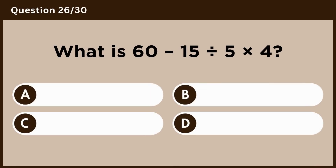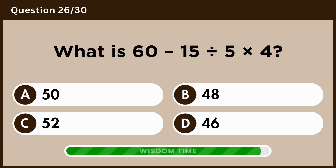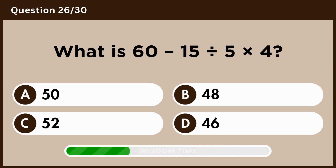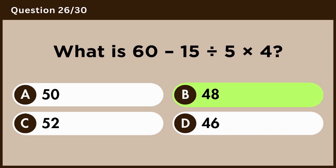What is 60 minus 15 divided by 5 times 4? Answer B, 48.